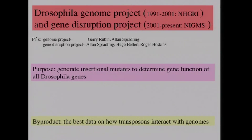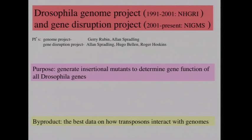This project started as the Drosophila Genome Project, supported by NHGRI for 10 years. The portion involving making mutations became the Gene Disruption Project, continued with NIGMS support. The purpose was to generate insertional mutants using transposons of all Drosophila genes so the community could do functional studies. As a byproduct, the best data for how transposons interact with the genome was generated at the same time.